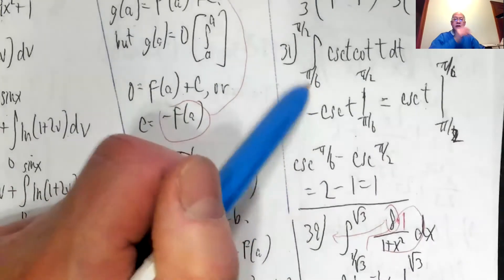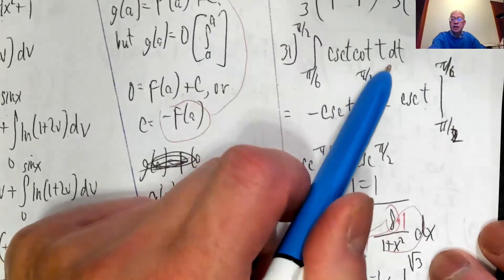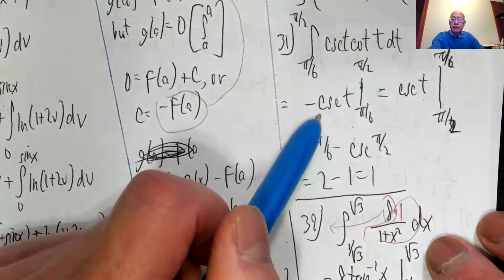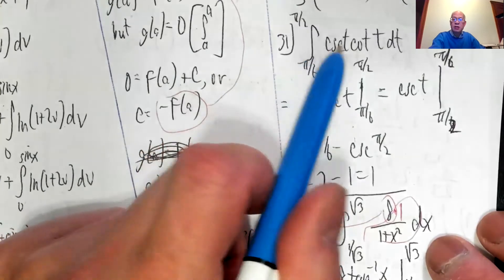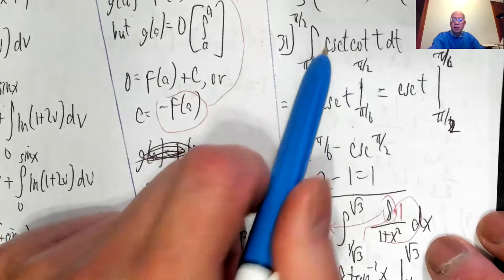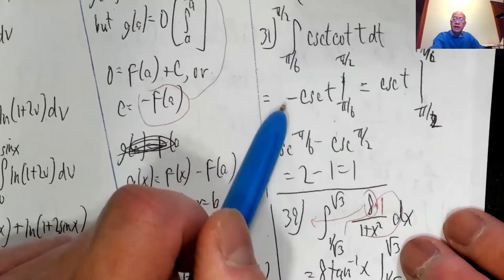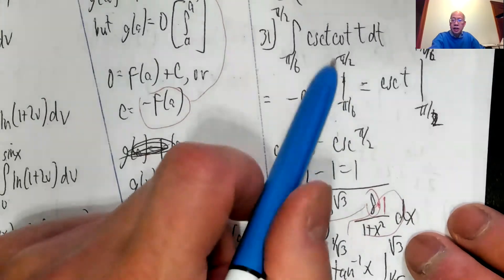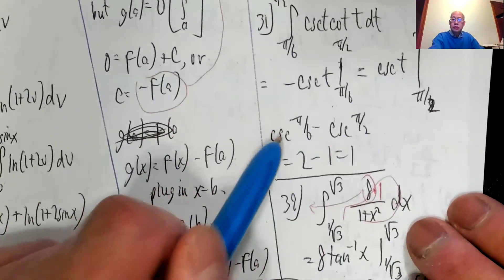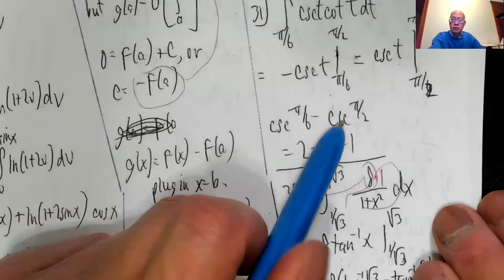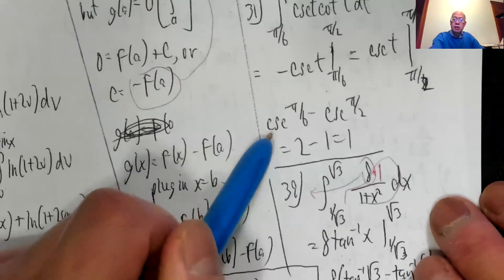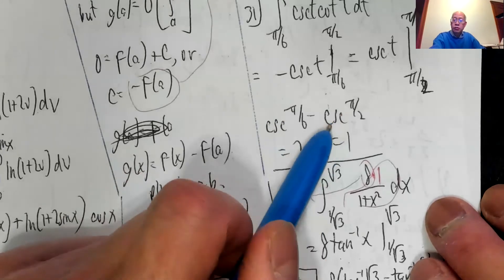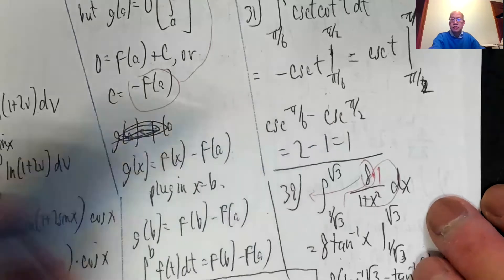Integral from pi over six to pi over two. Cosecant t cotangent t dt. Integral of this is negative cosecant t. You might recall the derivative of cosecant t is negative cosecant t cotangent t. So the integral of this, you have to put a negative in front of it. And I don't like the negative. So I can flip these two around, make it a positive and put pi over six on the top and pi over two in the bottom. So it's cosecant pi over six minus cosecant pi over two. Cosecant is the reciprocal of the sine. Sine of pi over six is a half. Reciprocal is two. Sine of pi over two is one. Flip it, it's one. Two minus one is one.